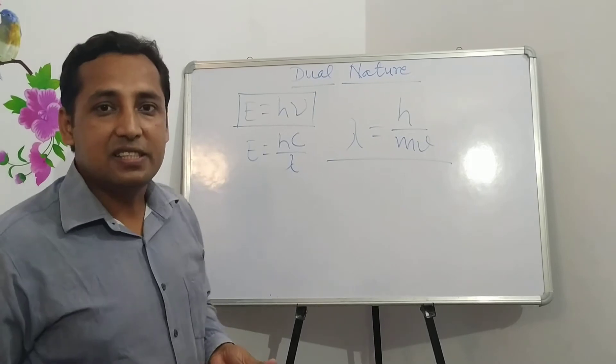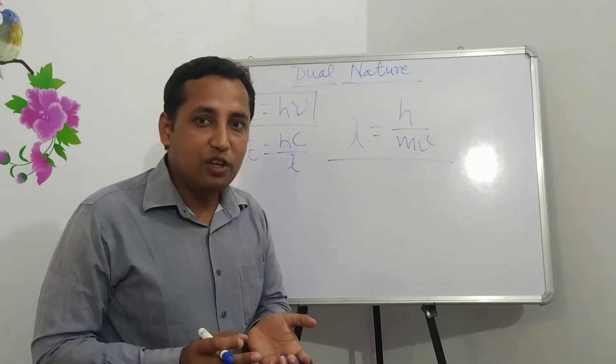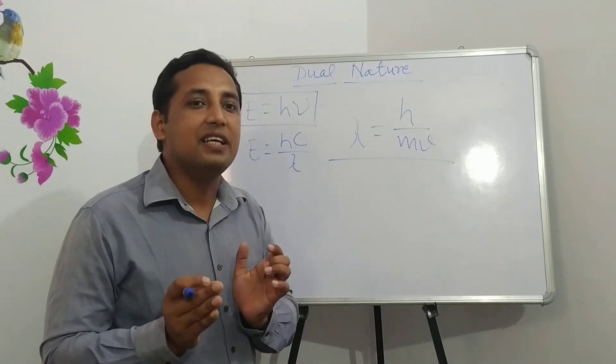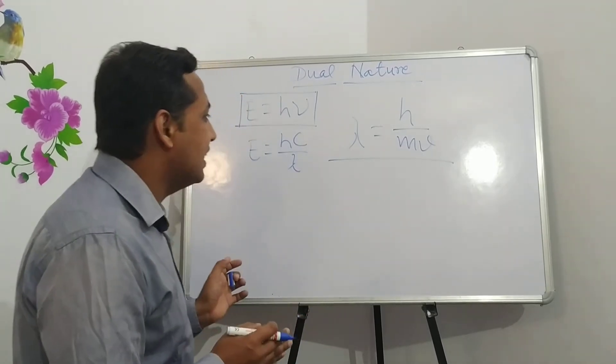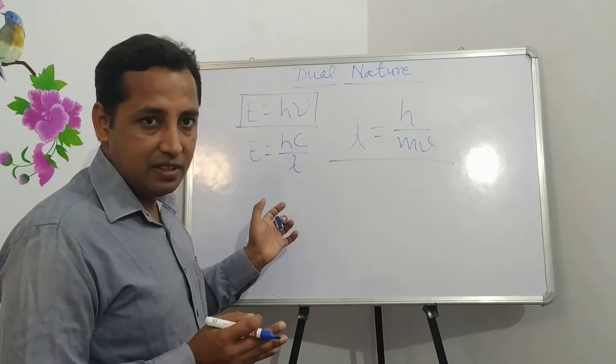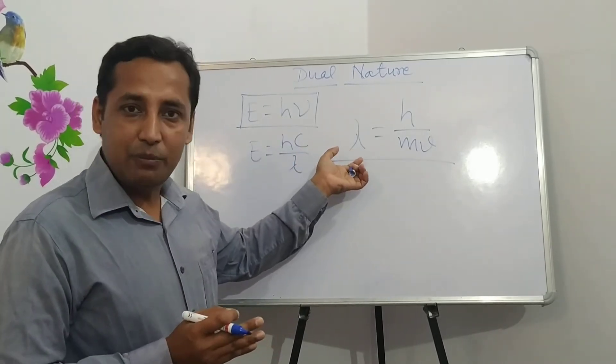In case of particles, characteristic property of particle is mass. Whereas the characteristic property of wave is wavelength, which is represented by λ.